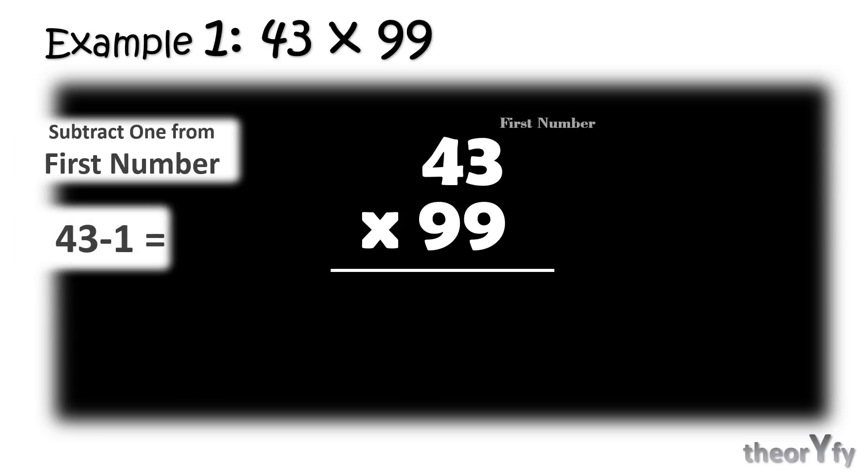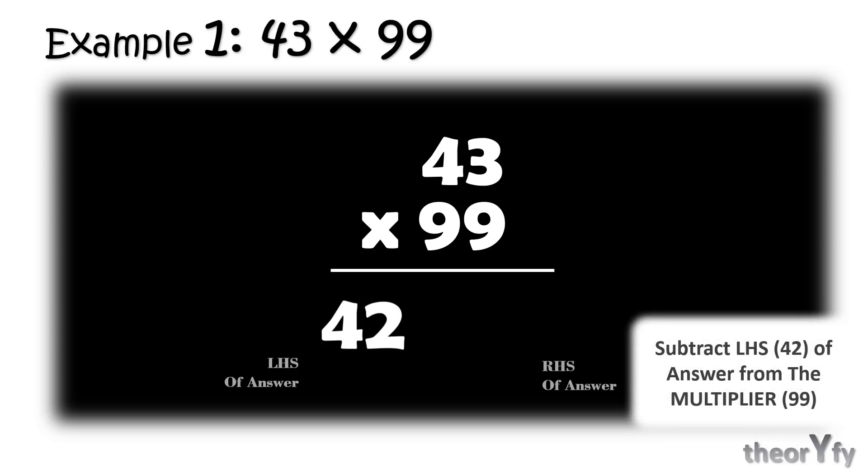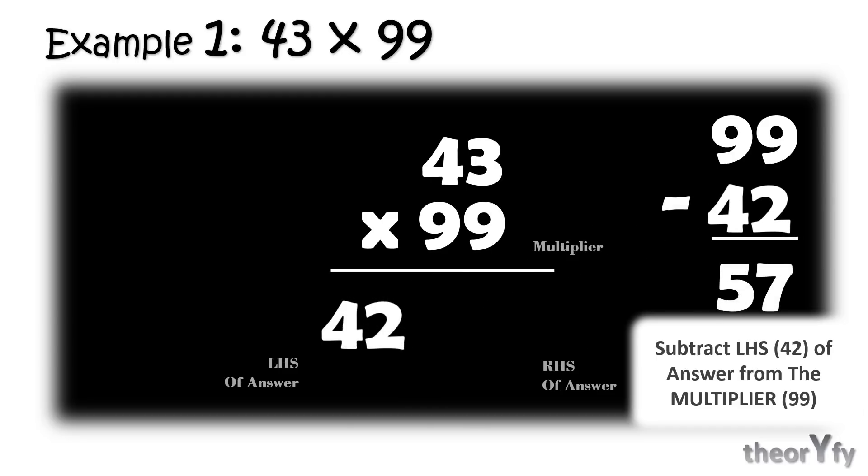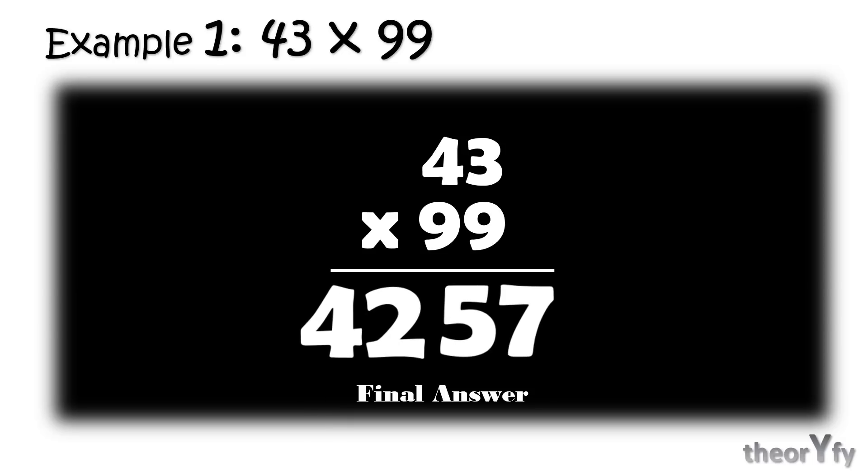Step 1 is subtract 1 from the first number. As you can see the first number here is 43, so subtract 1 from it. What you will get is 42. So this 42 is your left-hand side of the answer. Our final answer will be in two parts: first is LHS of answer, then RHS of answer. So let's solve RHS of it now. And to solve RHS, what you have to do is subtract LHS, which is 42, from the multiplier, the number with nines. So 99 subtract 42 from this, answer is 57. So this is your RHS and 4257 is your final answer.